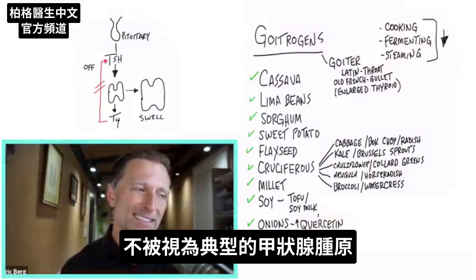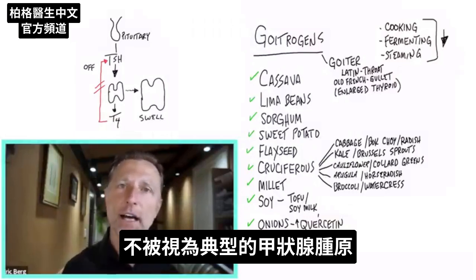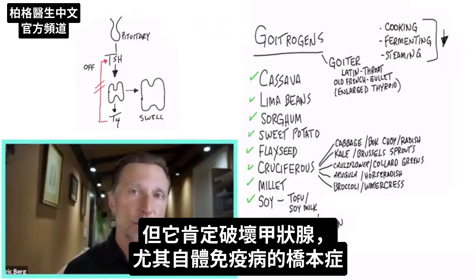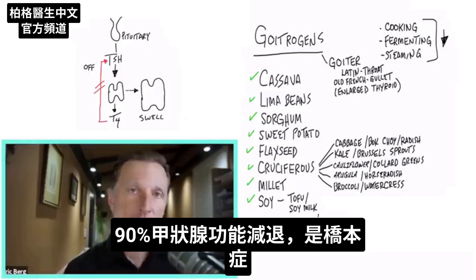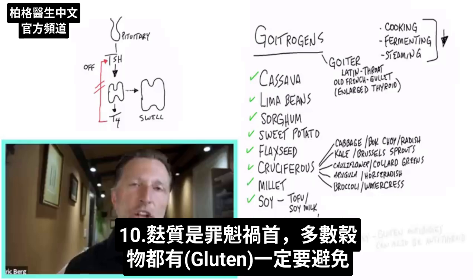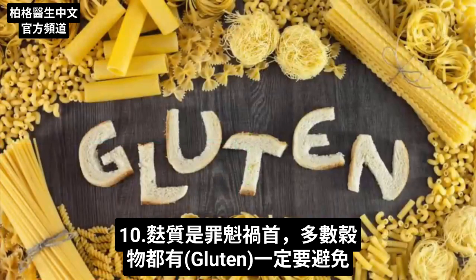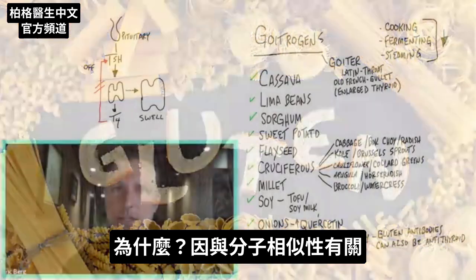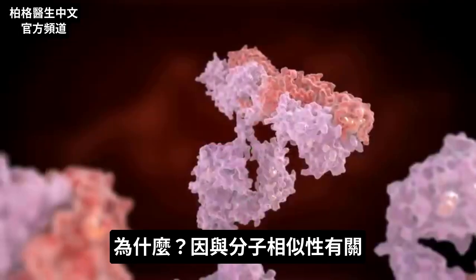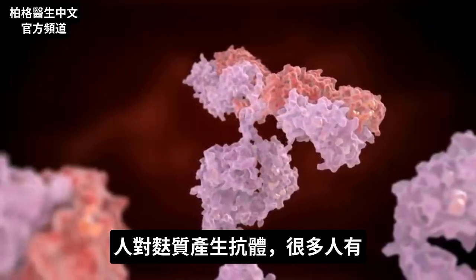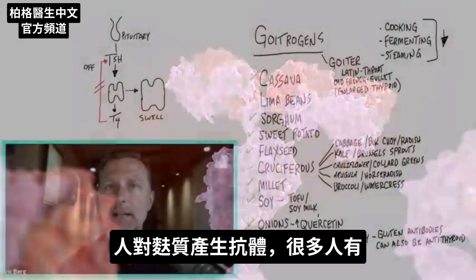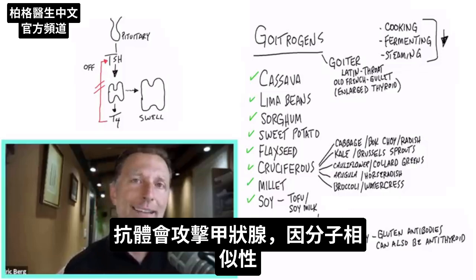This last thing isn't classically considered a goitrogen, but it definitely destroys the thyroid — especially in autoimmune thyroid Hashimoto's. In fact, 90% of all hypothyroid cases are Hashimoto's. The biggest culprit is gluten, found in many different grains, so gluten is something you have to avoid. This is related to molecular mimicry: if you have antibodies to gluten, those antibodies can cross over and start to attack the thyroid because of their molecular similarity.